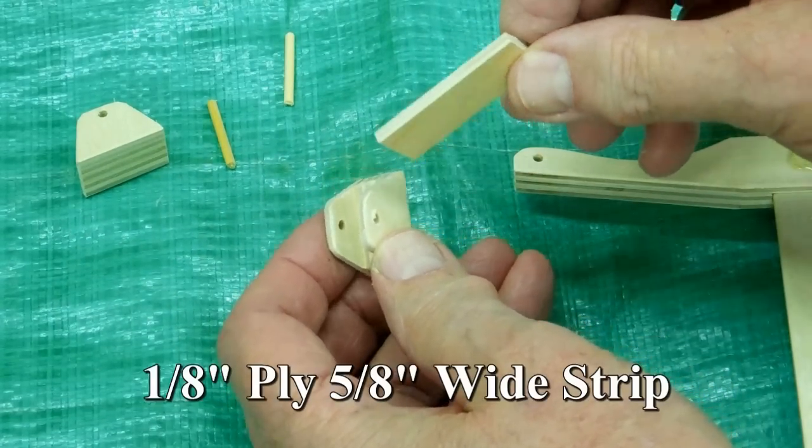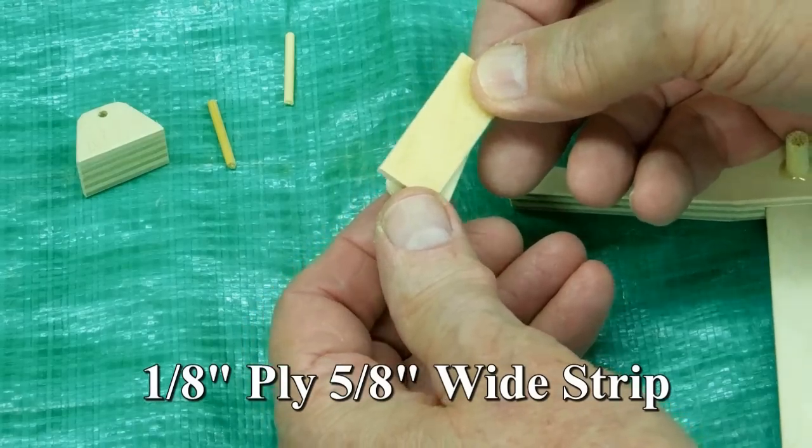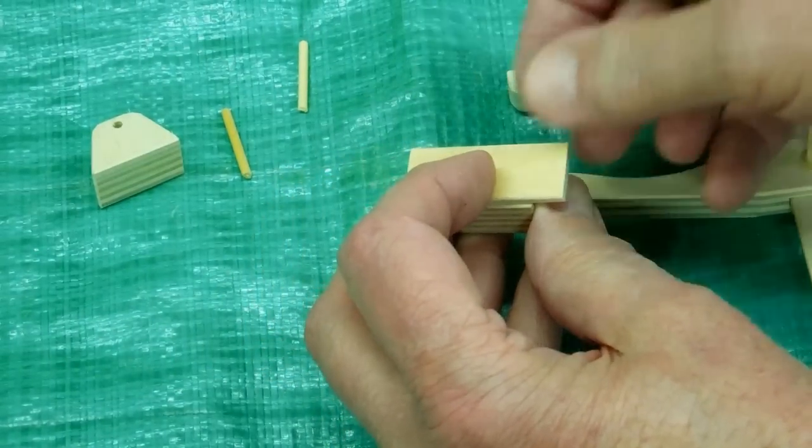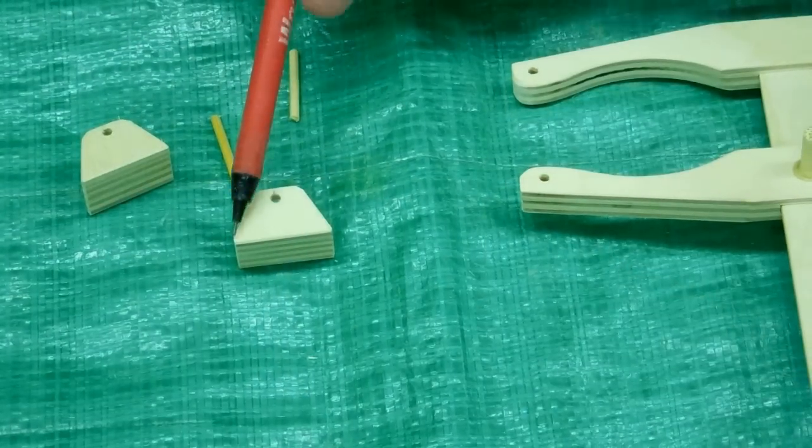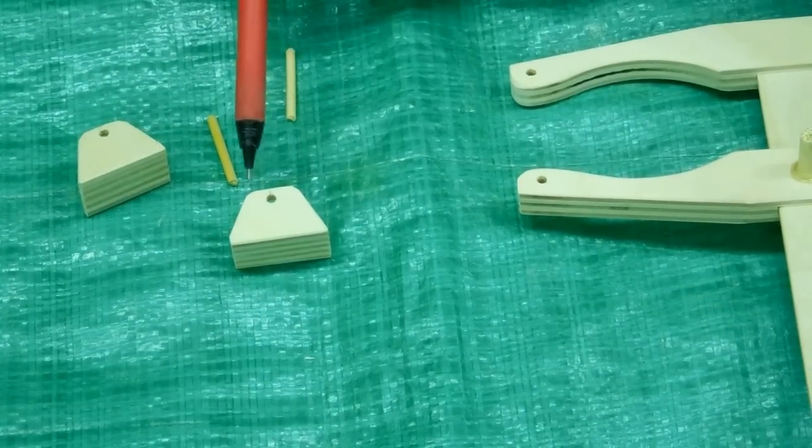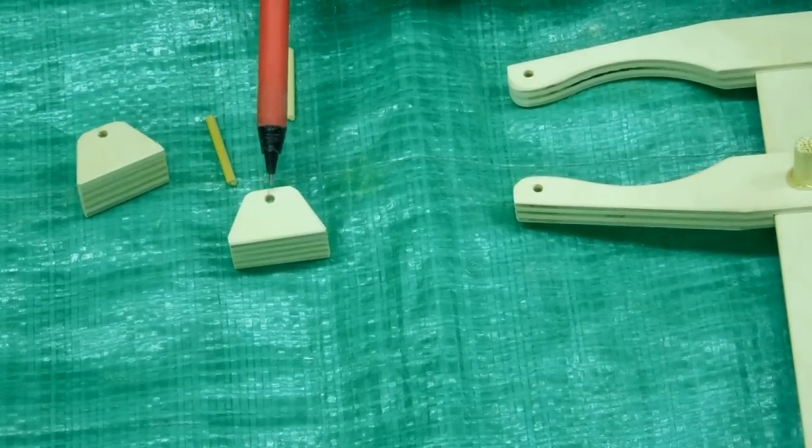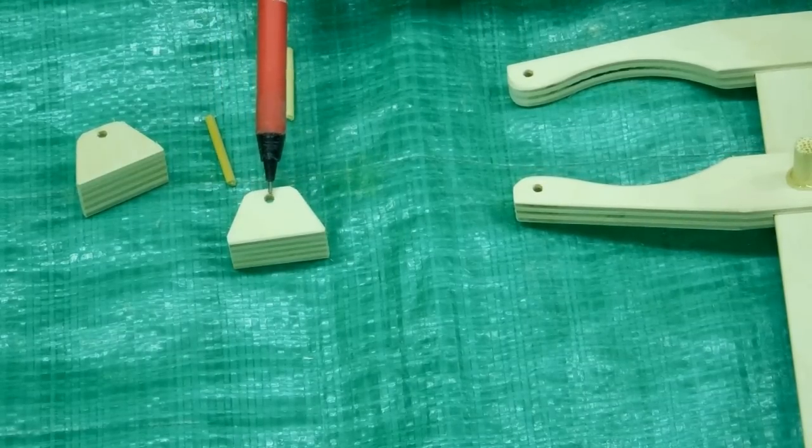I made some 5⅛ inch wide strips of 1⅛ inch plywood and glued that to both sides of that piece. I cut this off in a 1 inch length. I marked a ½ inch here and tapered the sides.